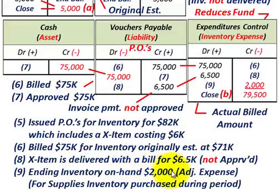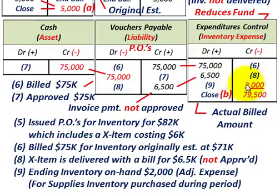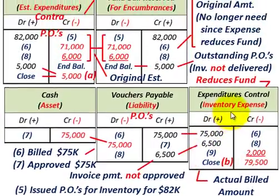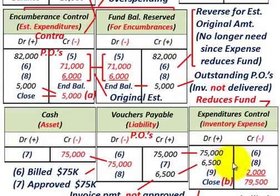The ending inventory on hand is $2,000, and we have to adjust our expense for that. The ending inventory of $2,000 represents supplies purchased during the period — part of that original $75,000 worth of inventory supplies. We go to our expenditures control account and reduce that expense by $2,000, because those supplies are still remaining on hand. So we credit or reduce our expenditures control by $2,000.